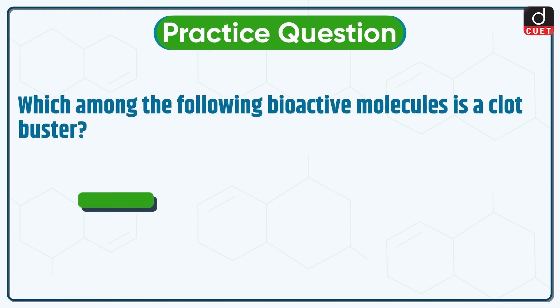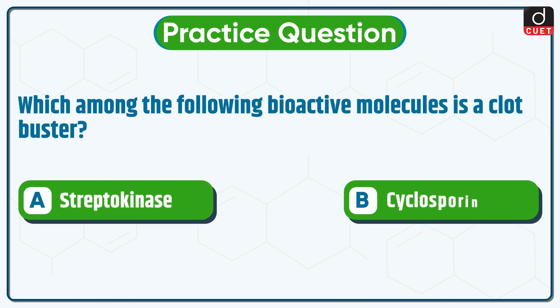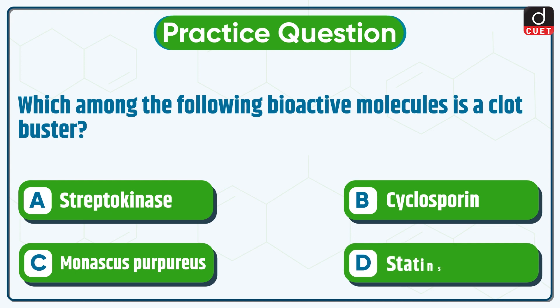Now it's time for the practice question: which among the following bioactive molecules is a clot buster? Streptokinase, Cyclosporin, Monascus purpureus, or Statins? Send the answer to this question in the comment section. Stay tuned for the next episode. Thanks for watching.